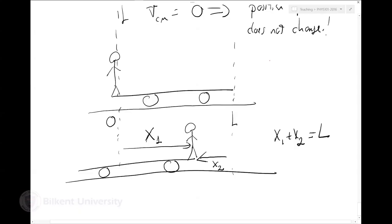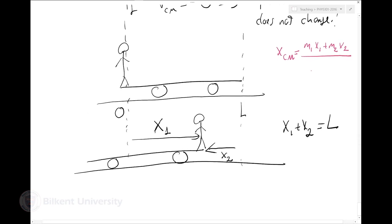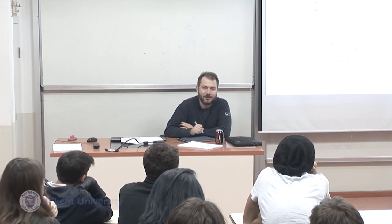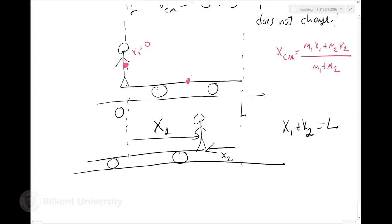In the initial case, x center of mass equals M1 times x1 plus M2 times x2, divided by M1 plus M2. My initial position x1 is zero. Assuming symmetry, the center of mass of the car is right in the middle, so x2 will be L over 2.